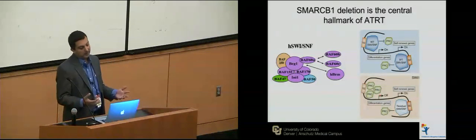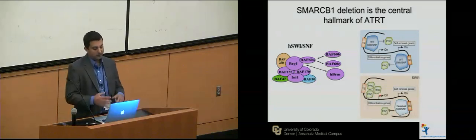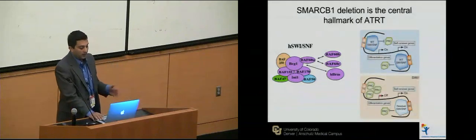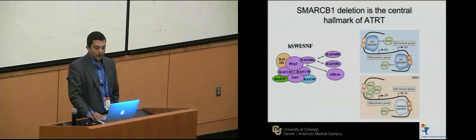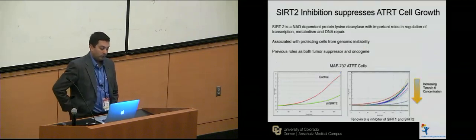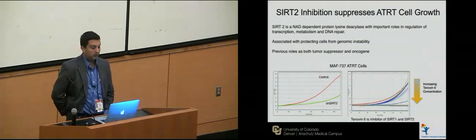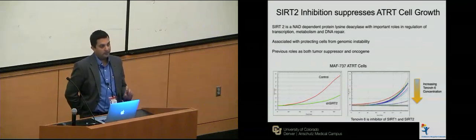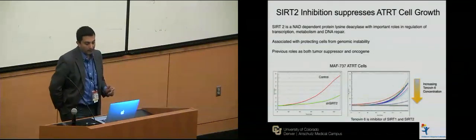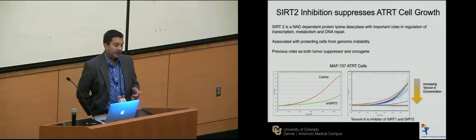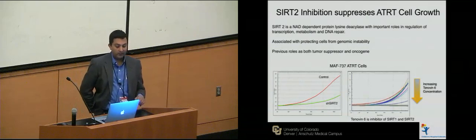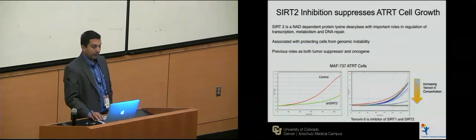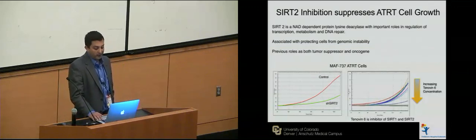The SMARCB1 and SWI/SNF complex itself are not targetable, but we've identified downstream molecules that could be potential therapeutic targets. When we did the RNAi screen, SIRT2 was the top hit in our entire screen. SIRT2 is a protein lysine deacetylase with roles primarily described in aging and neurodegeneration; its role in cancer is not very well known. When we independently knock down SIRT2, we get a significant decrease in ATRT cell proliferation. There's also a drug called tenovin-6 — an inhibitor of SIRT1 and SIRT2 — and treating cells with it also gives a decrease in cell growth, suggesting SIRT2 is a regulator in the context of SMARCB1 deletion.